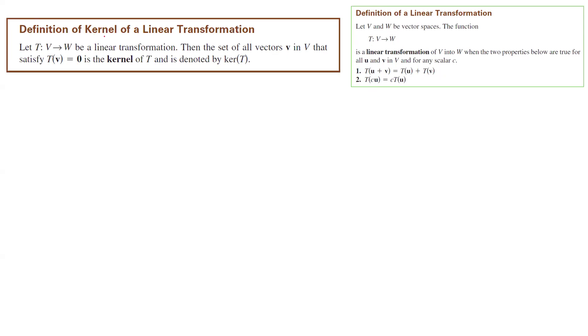We can define the kernel of a linear transformation. For a linear transformation like T, the set of all vectors in V such that T(v) is equal to zero is called the kernel of T and it's denoted by ker(T).